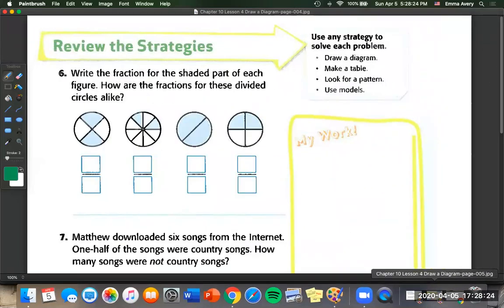On to the next page. So we're going to write a fraction for the shaded part of each figure. How are the fractions for these divided circles alike? So we've got four pieces. One, two, three, four. And two are colored in. So we're going to put two on top.